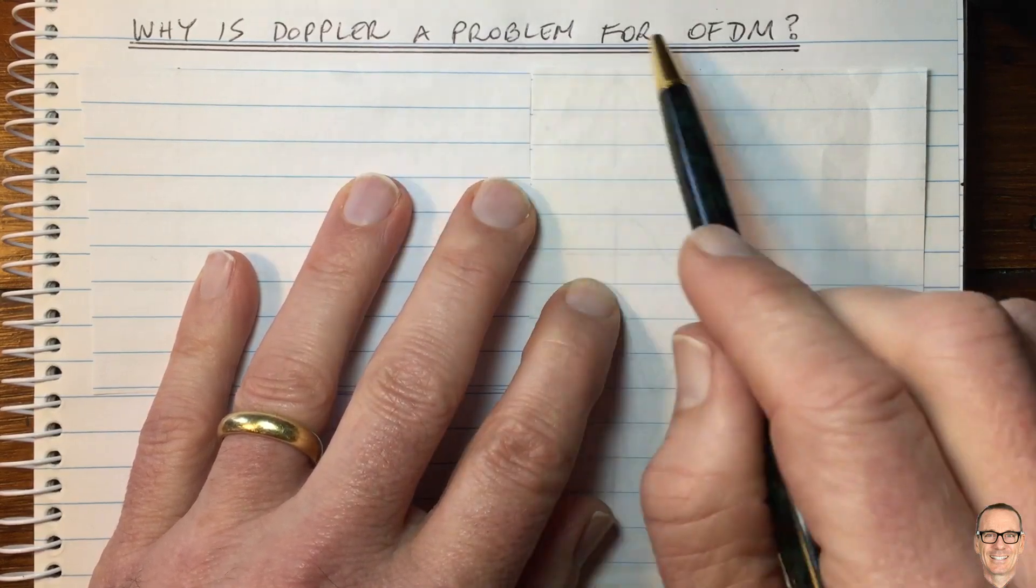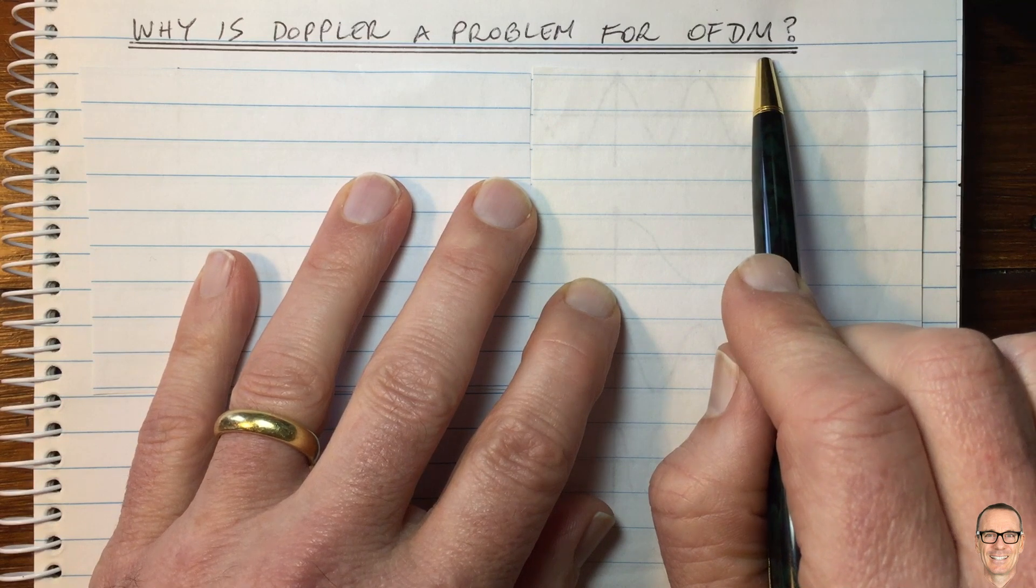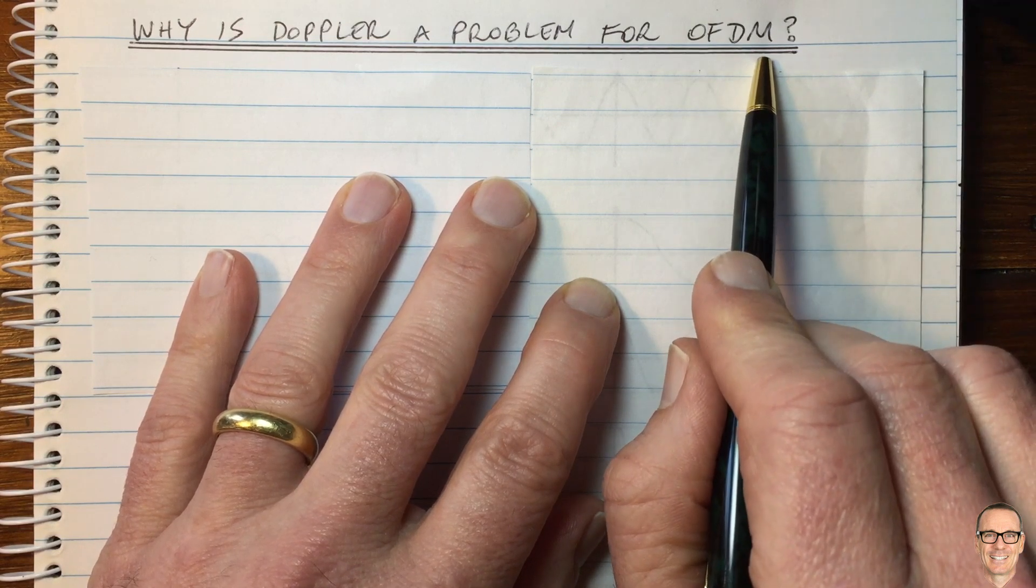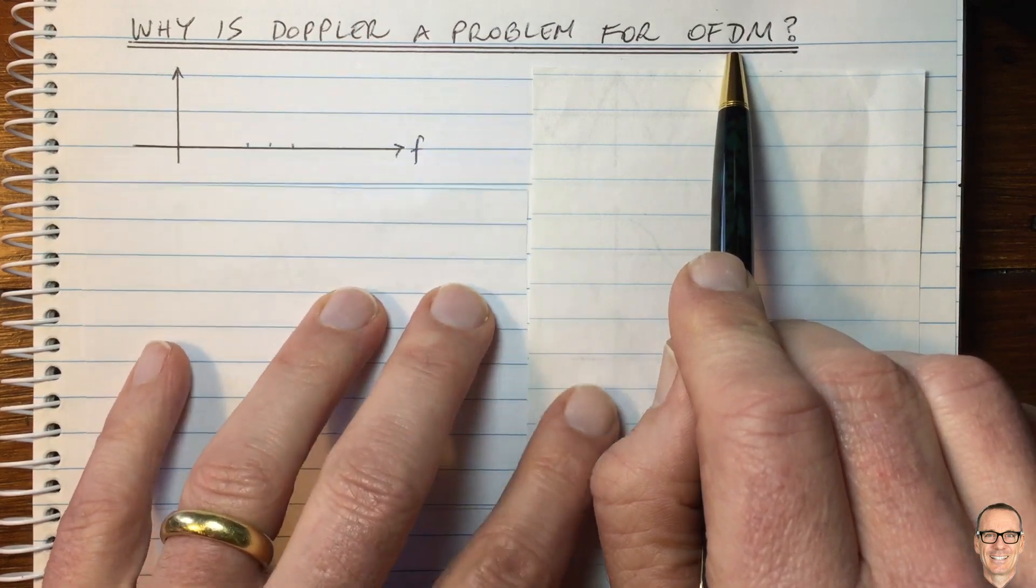Why is Doppler a problem for OFDM? In OFDM, we send data on orthogonal subcarriers. So let's start by thinking about what that orthogonality really means.